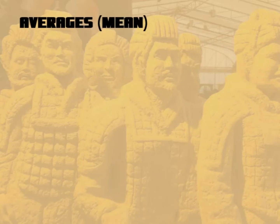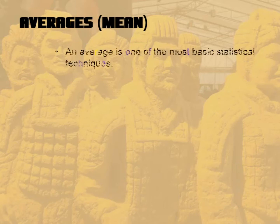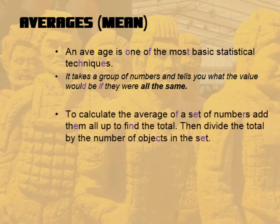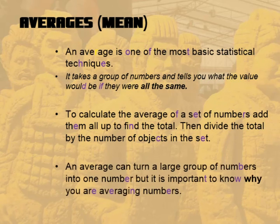Averages, or the mean — its statistical term — is one of the most basic statistical techniques. An average takes a group of numbers and tells you what value they would be if they were all the same, given the same total quantity. To calculate the average or mean of a set of numbers, you add them all up to find the total, and then you divide the total by the number of objects in the set. An average turns a large group of numbers into one number, but you need to know exactly why you're averaging numbers.